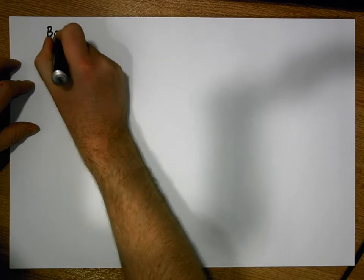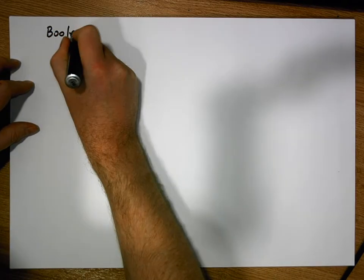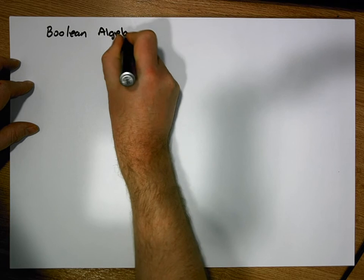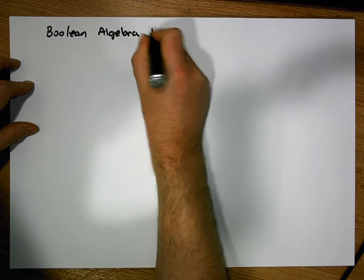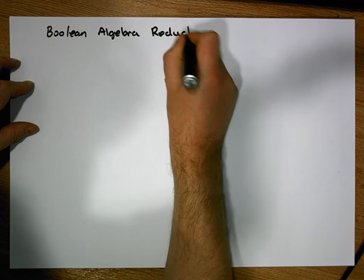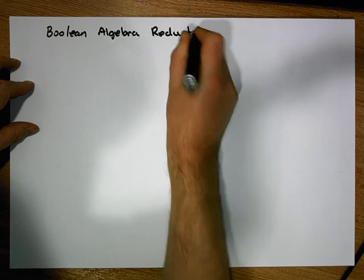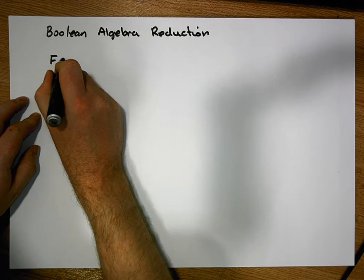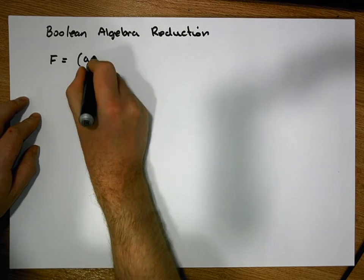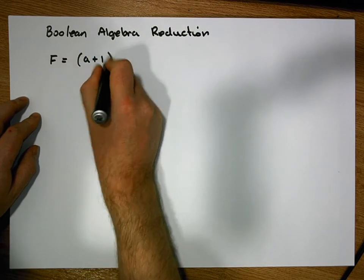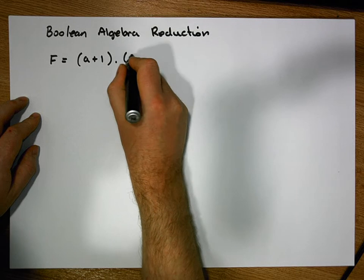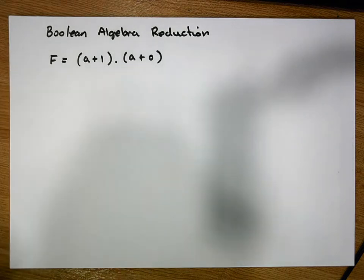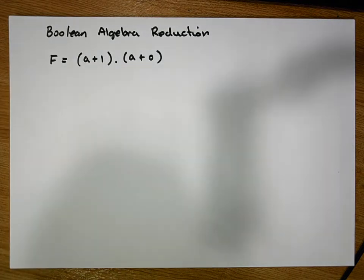So this is a Boolean Algebra Reduction. What we're going to consider is the function f is equal to a OR'd with 1, AND'd with a OR'd with 0. And we're going to see what we get.